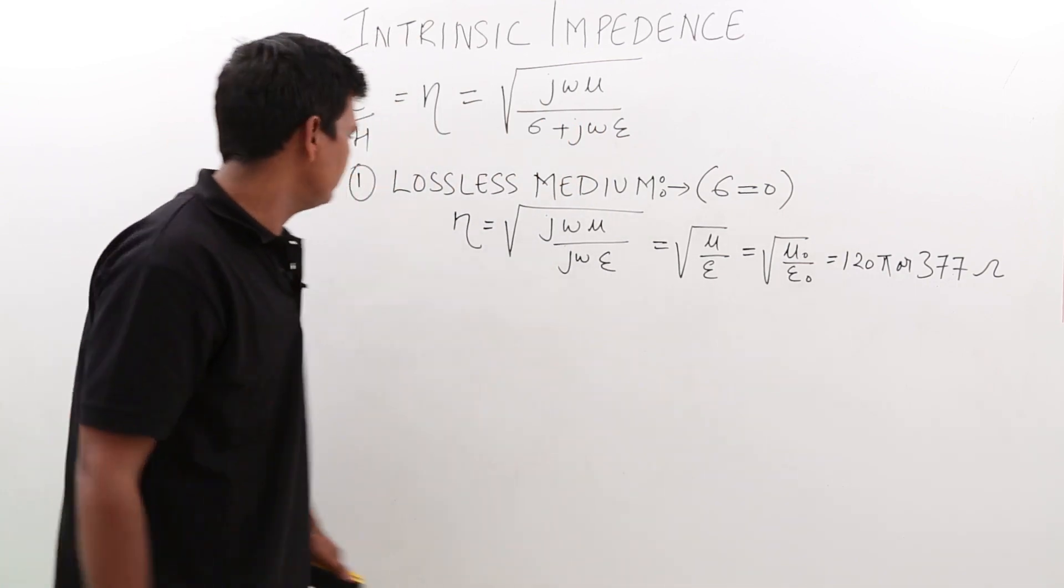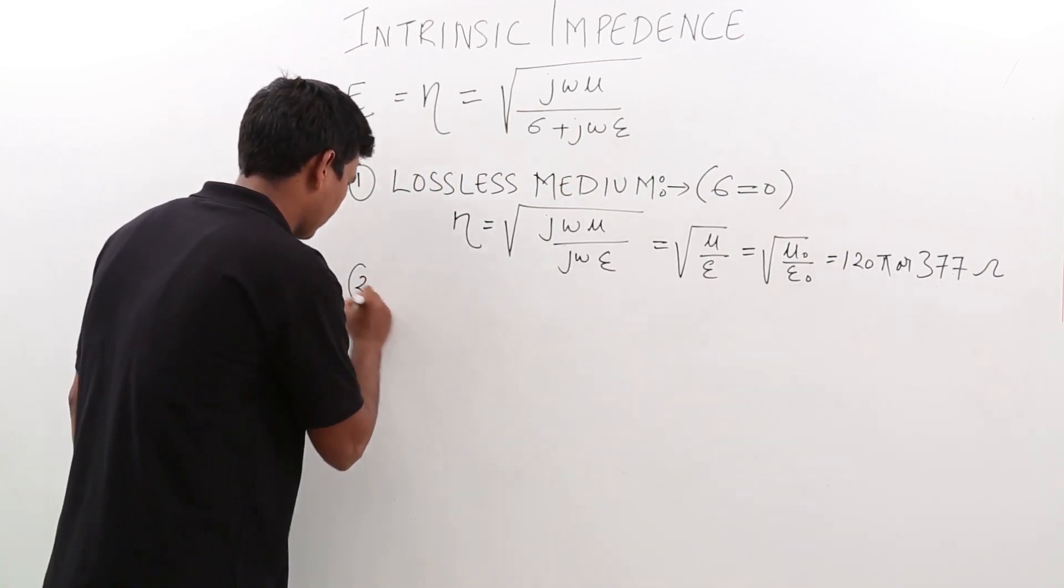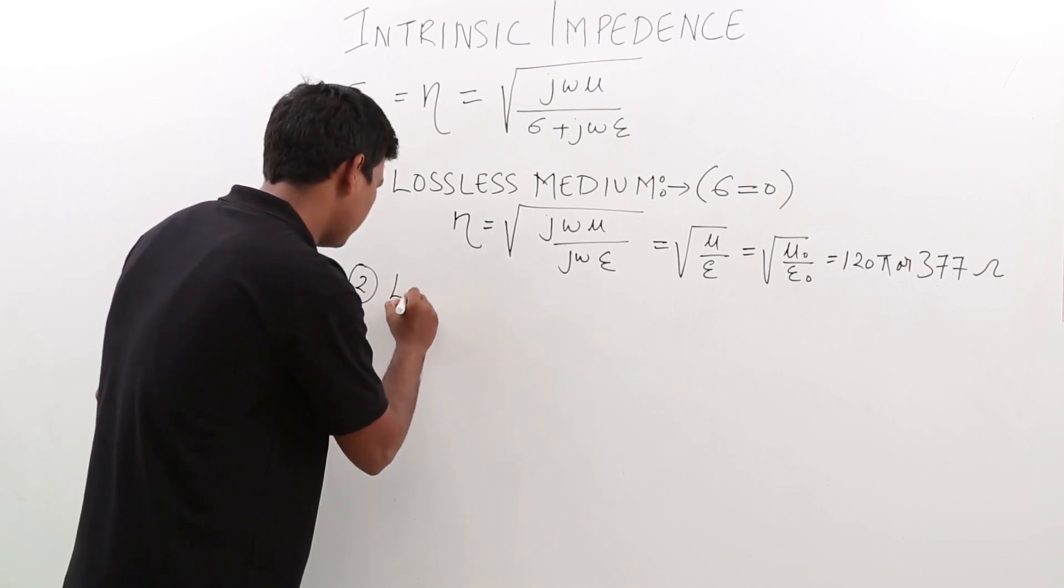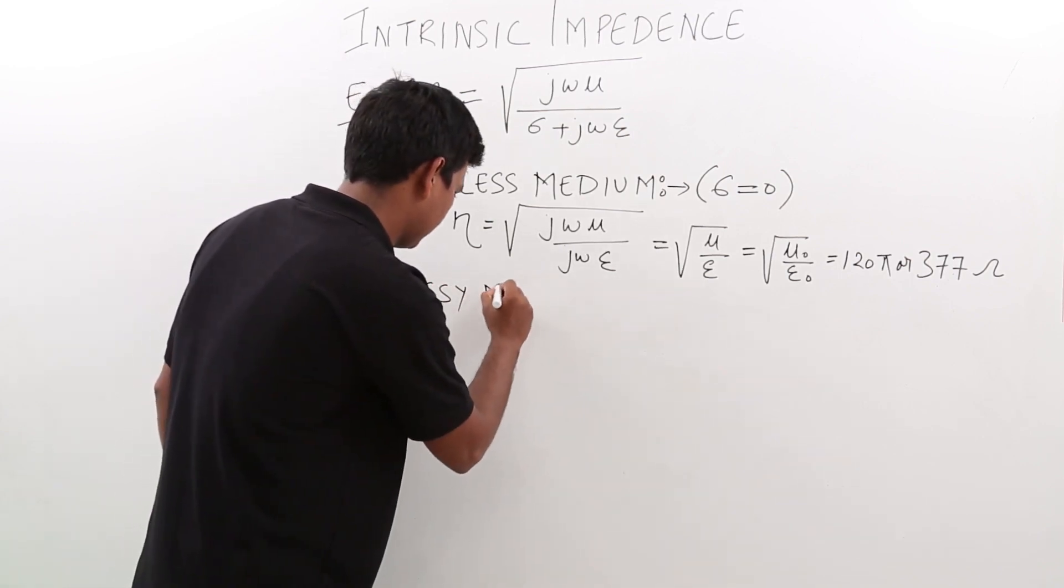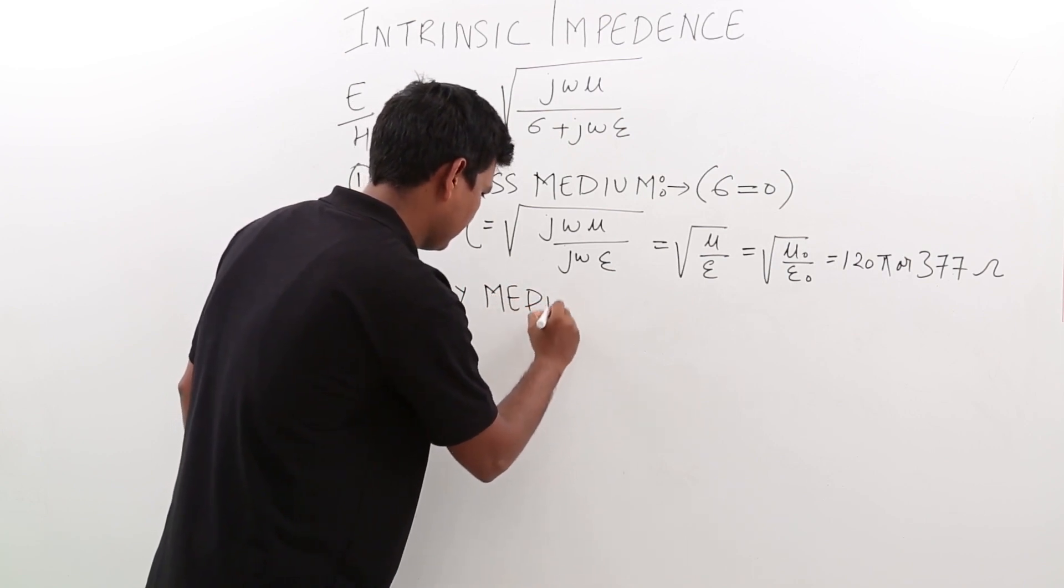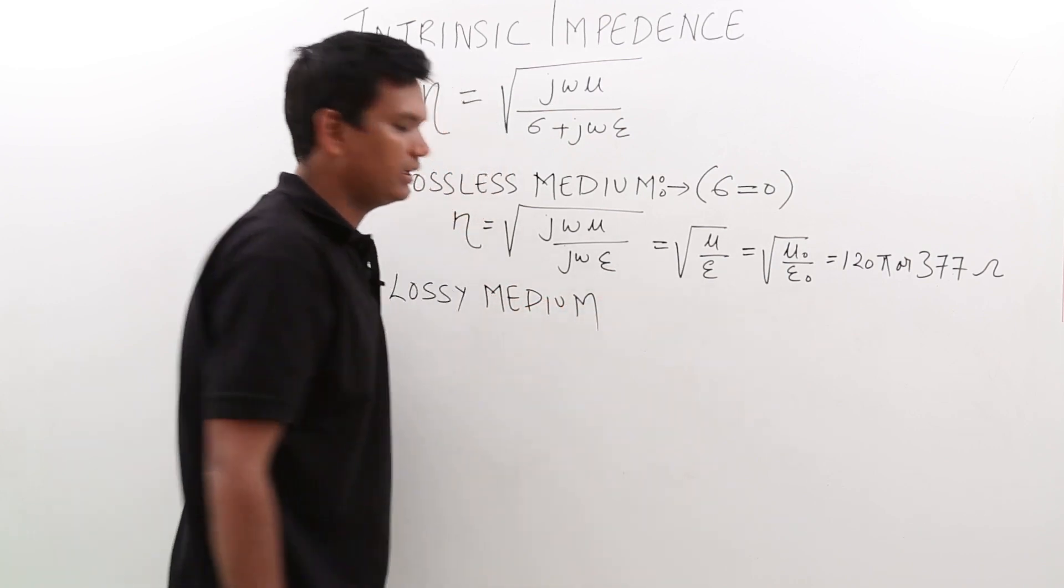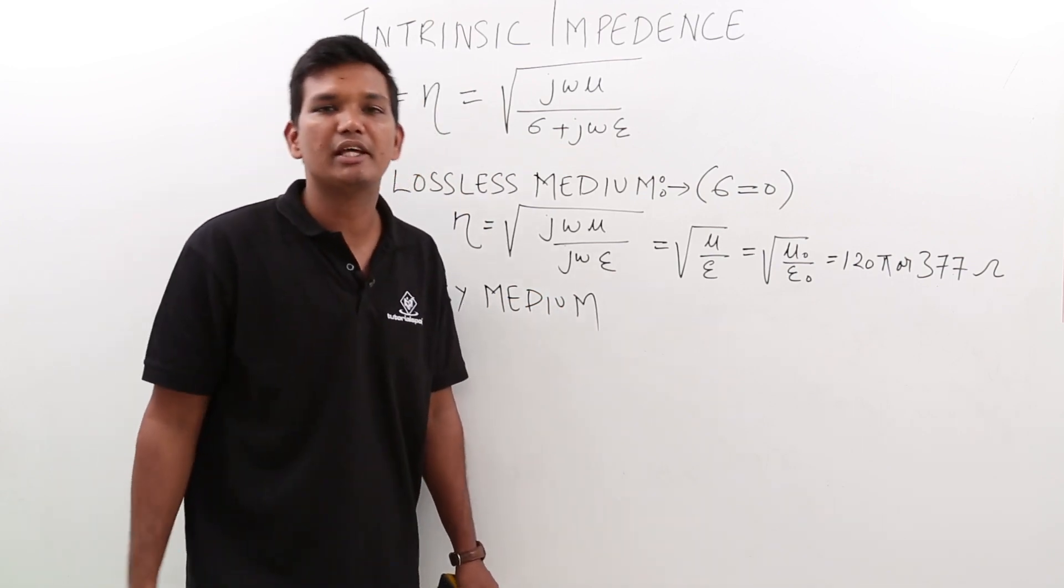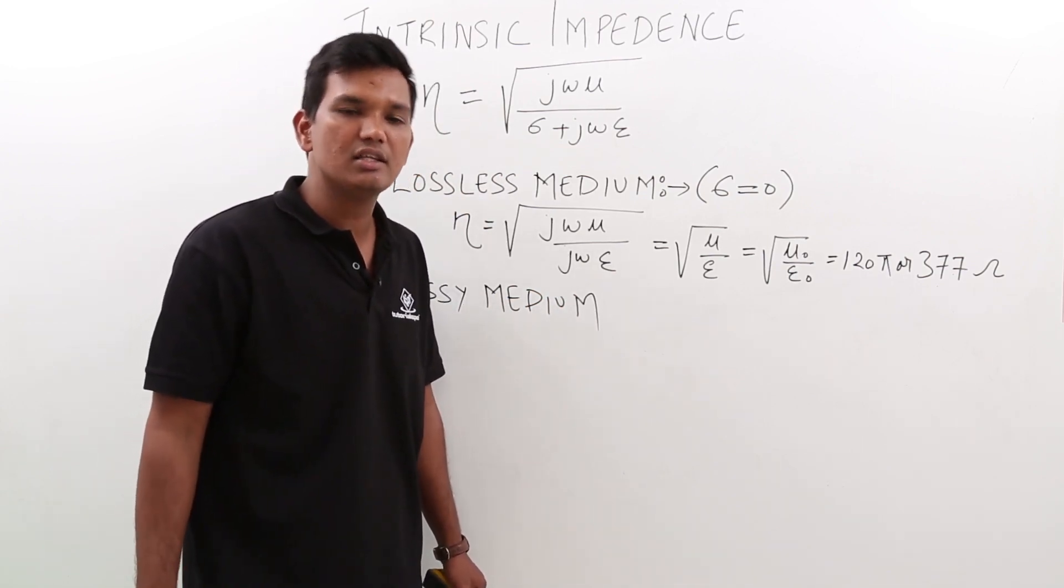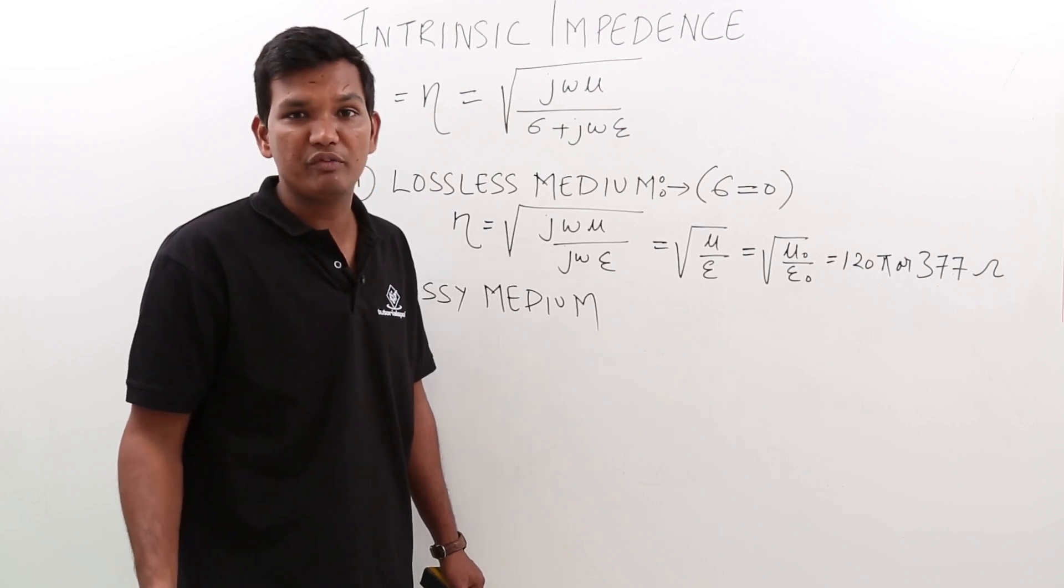Let us try to find it in another medium. In case of a lossy medium, what do we know? In a lossy medium, there will be a lot of free charge carriers, so sigma would be very, very high. In that case, sigma would be very much greater than one.